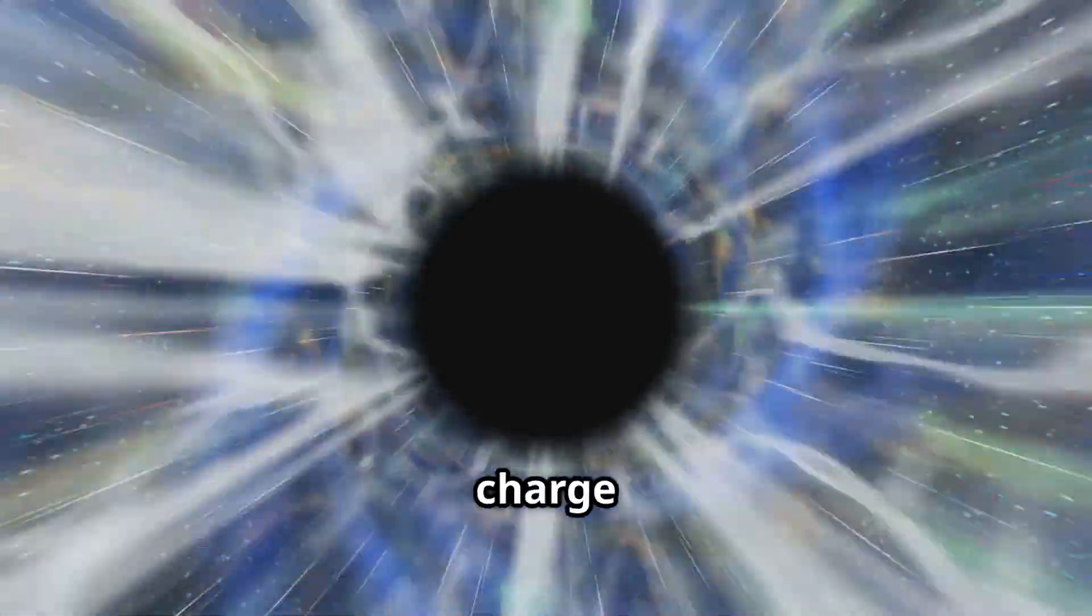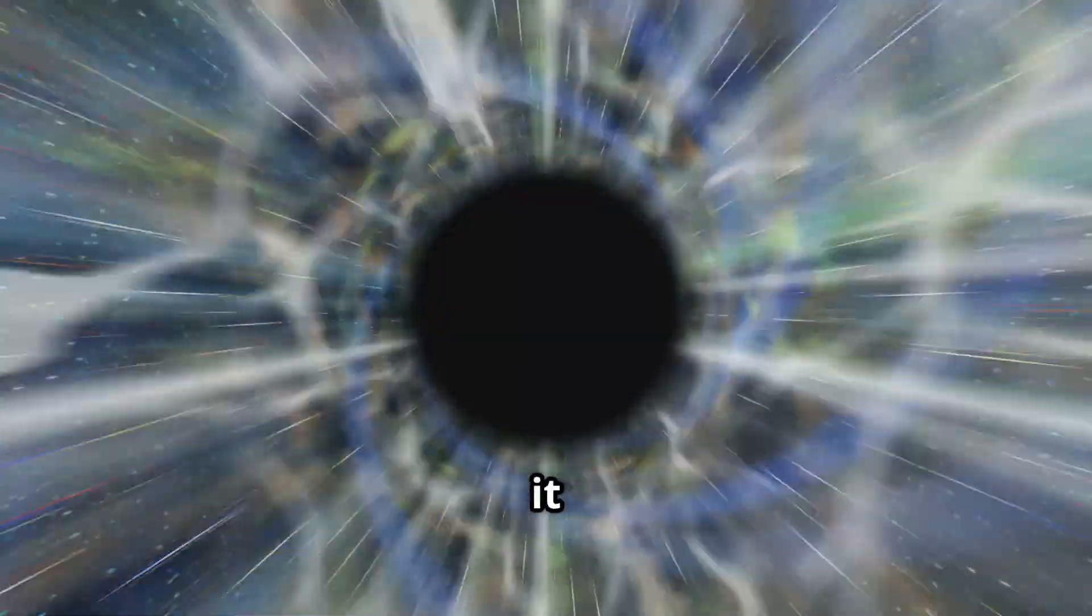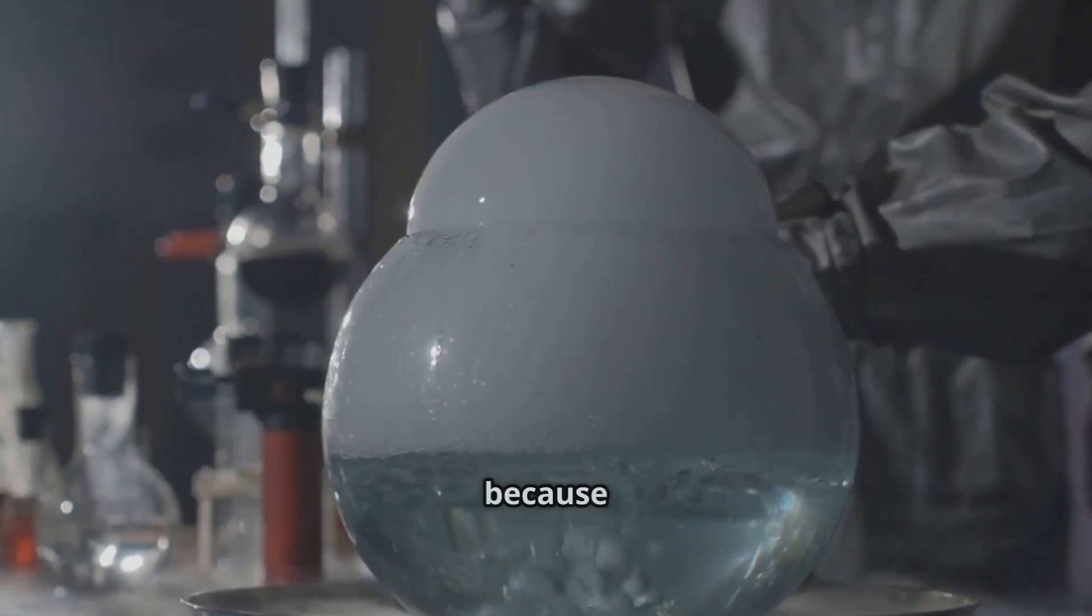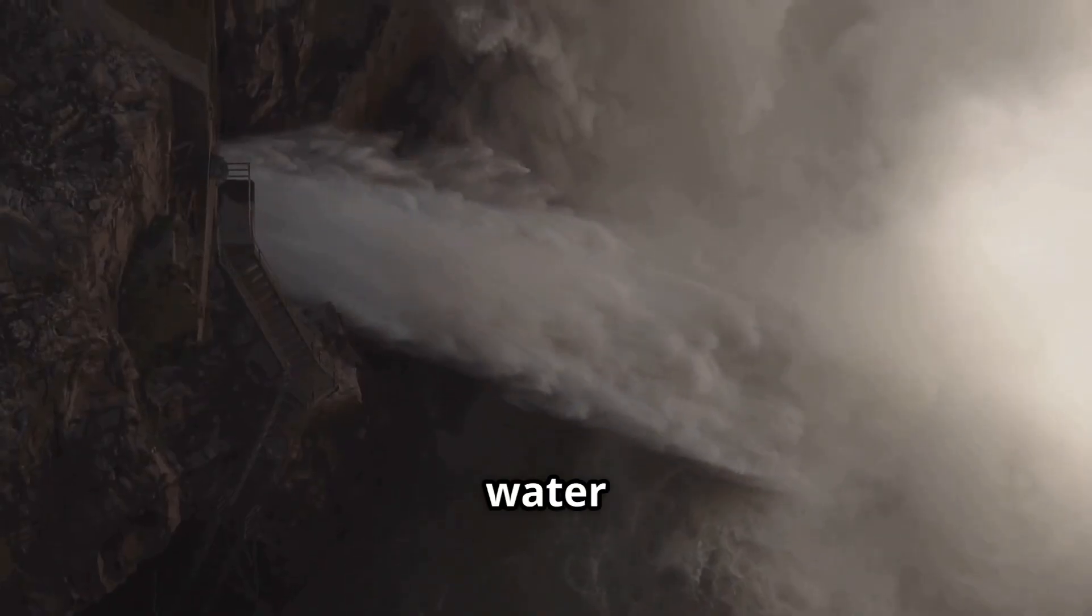Gravity only has one charge: mass. Everything with mass attracts. There's no anti-gravity to cancel it out. You can't build a gravity shield because any shield material has its own mass. It's like trying to build a dam out of water. The material is the very thing you're trying to stop.